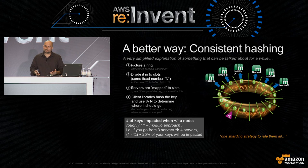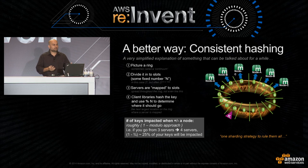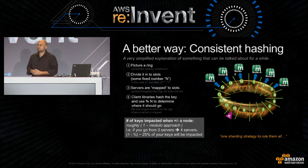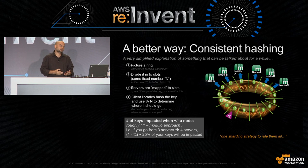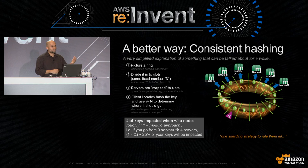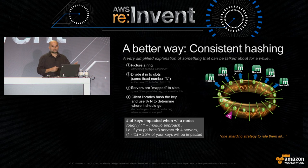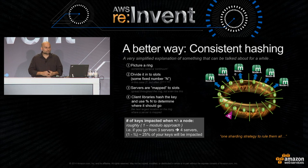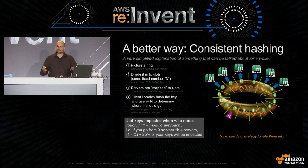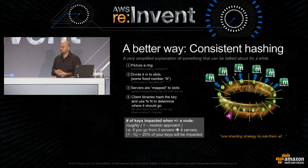So that's why you want to use our libraries or any library that provides consistent hashing — not just the ElastiCache libraries. The benefit of the ElastiCache libraries is they handle not only consistent hashing but also the auto-discovery aspect. We'll talk in a few minutes about strategies for handling auto-discovery if you're not able to use our clients.